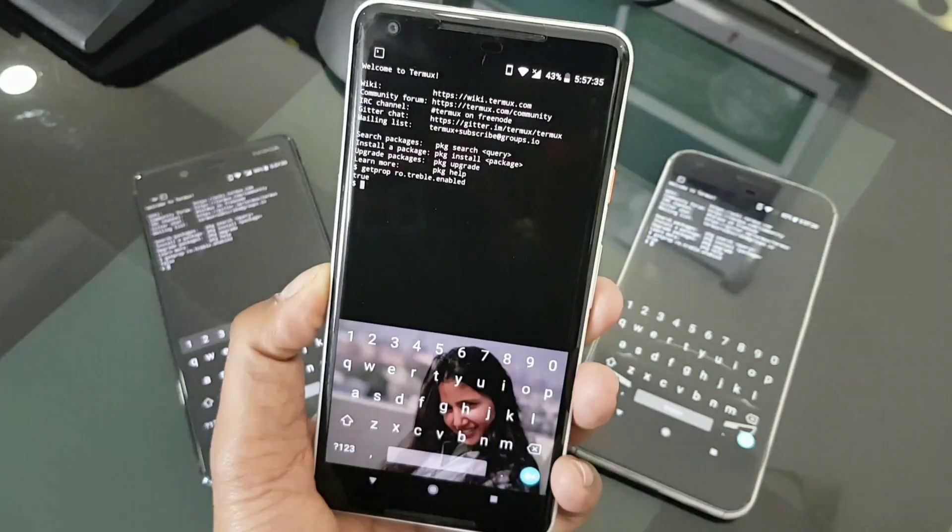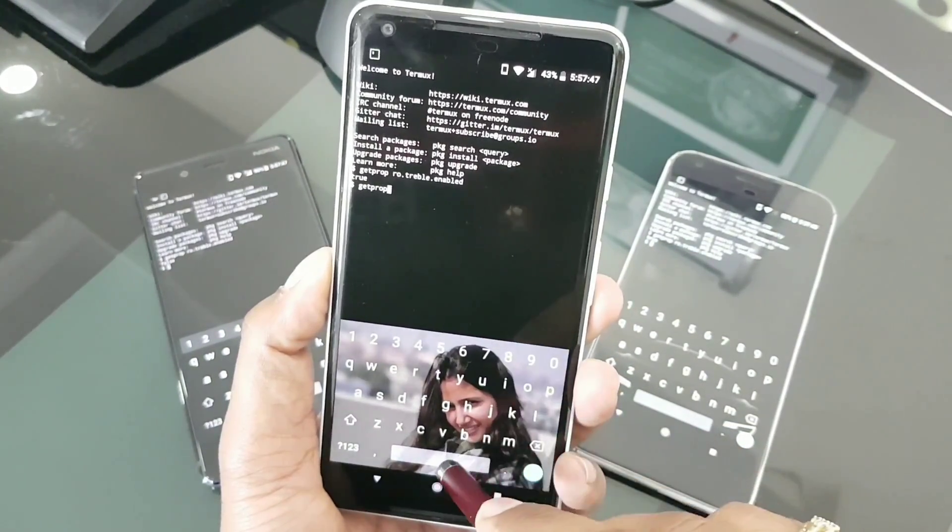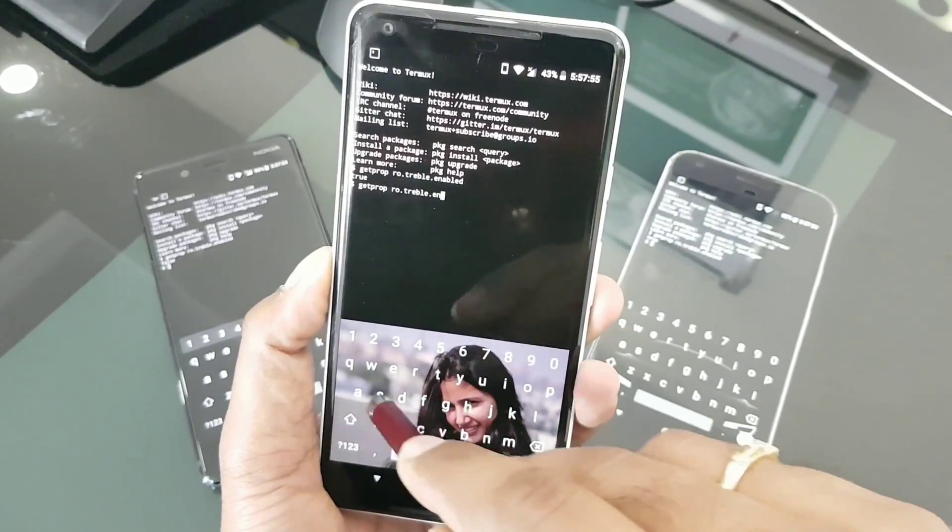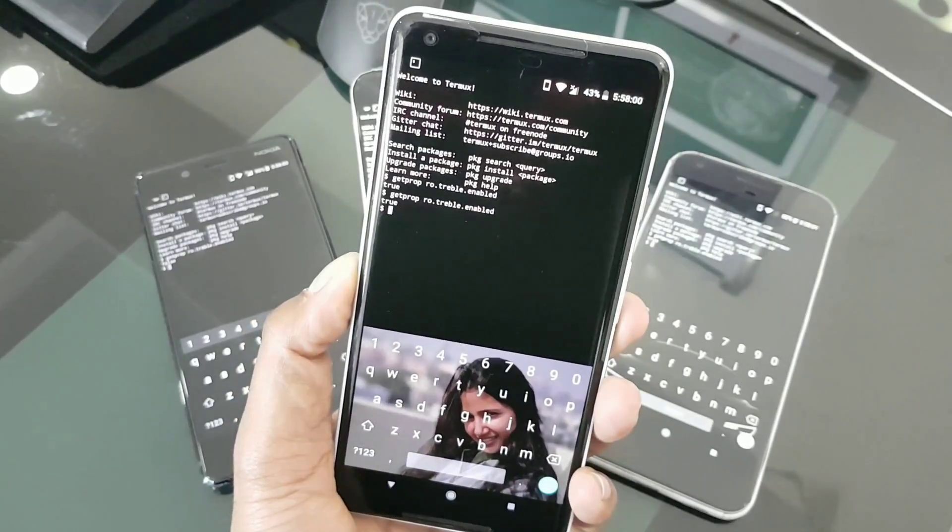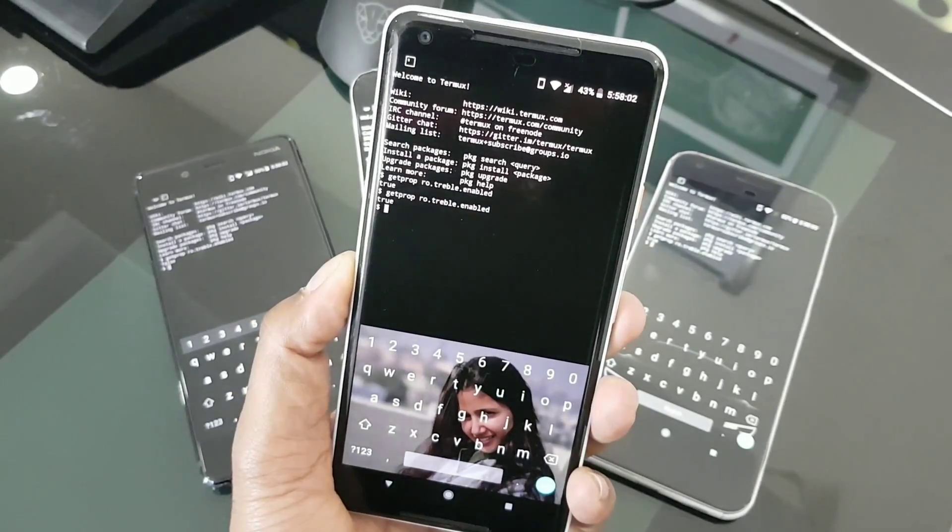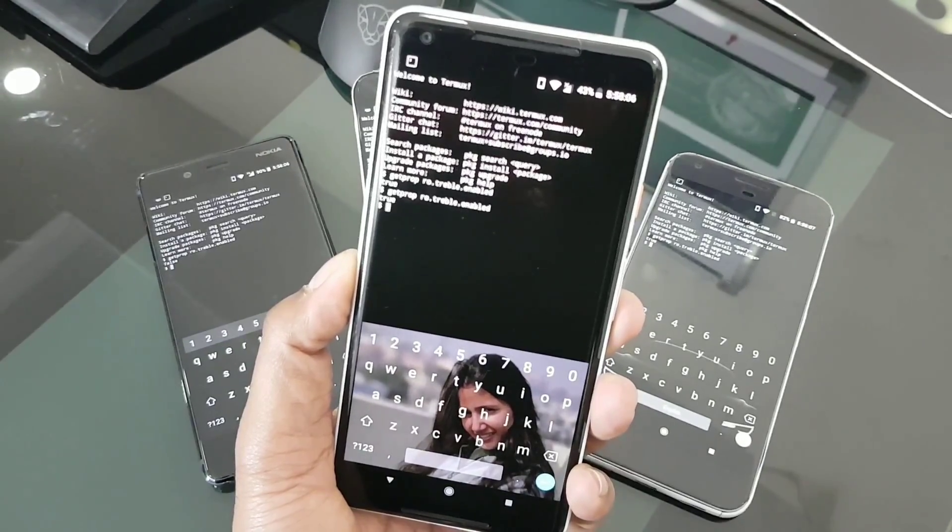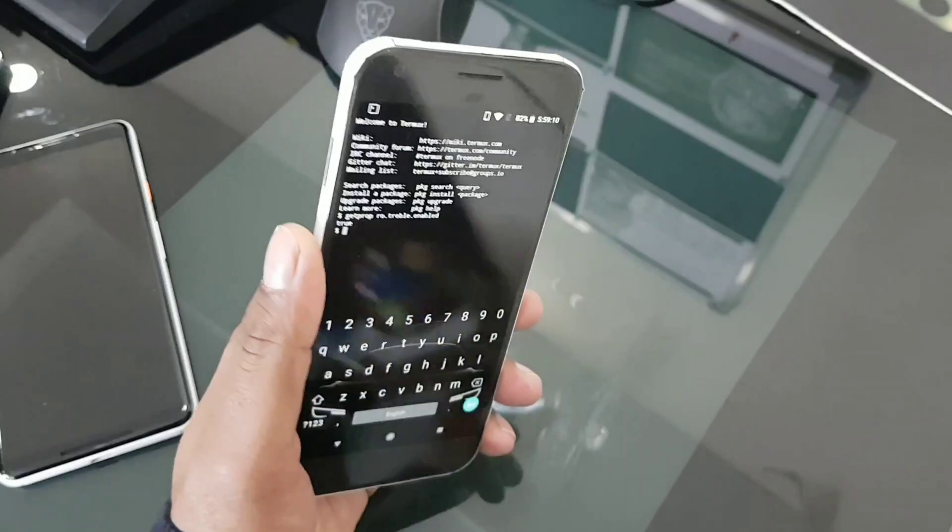Now the third is, guys, how to check it. The best way to check is to install an application called Treble Check. The link is in the description. It is a free application, no problem with that. Doesn't need any root. You just have to install it and you need to execute a command called 'getprop space ro.treble.enabled'. Once you execute that command, this command is going to read your build.prop file, which is kind of a main important file. If it returns true, that means your phone is Treble compatible.